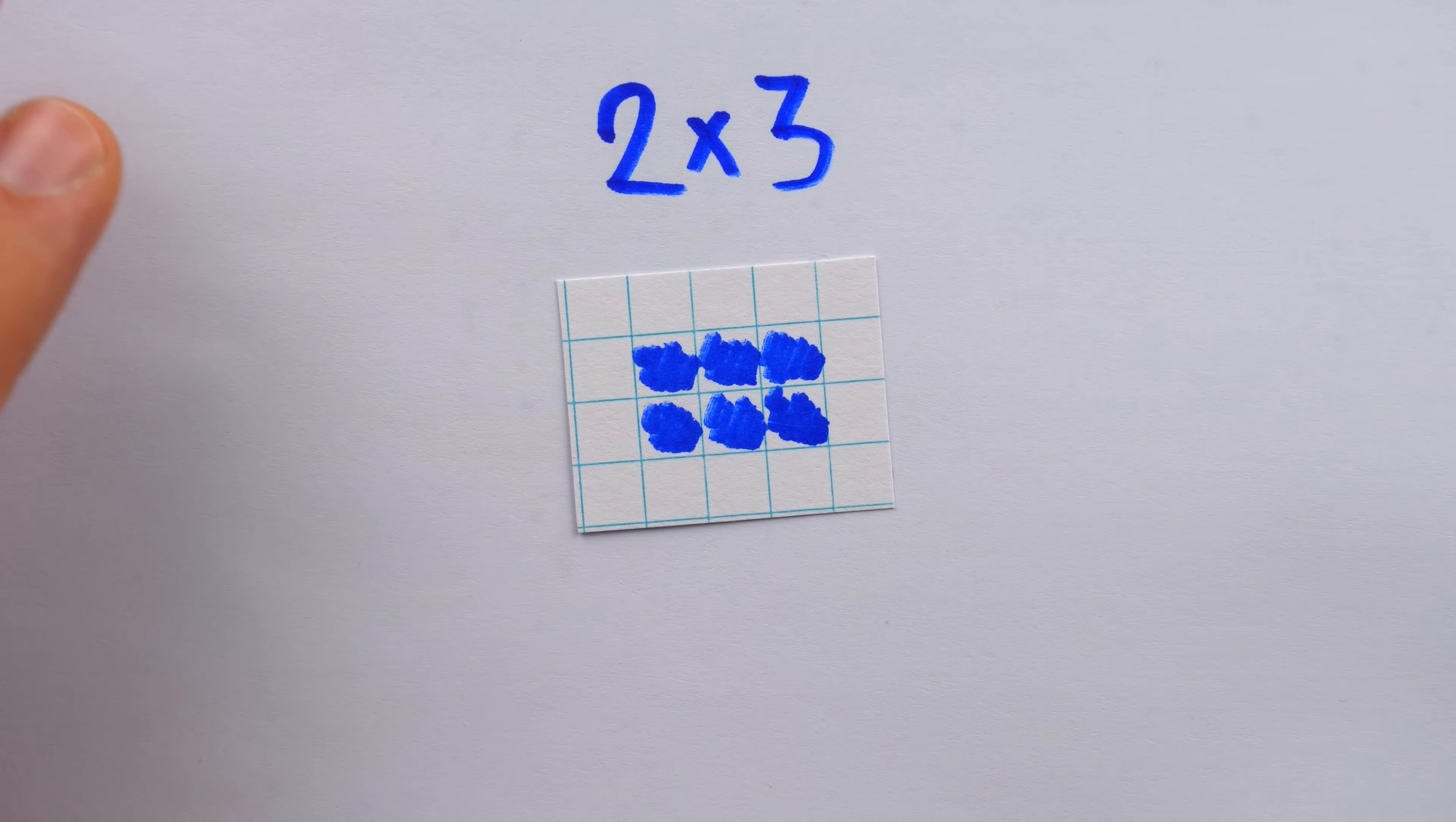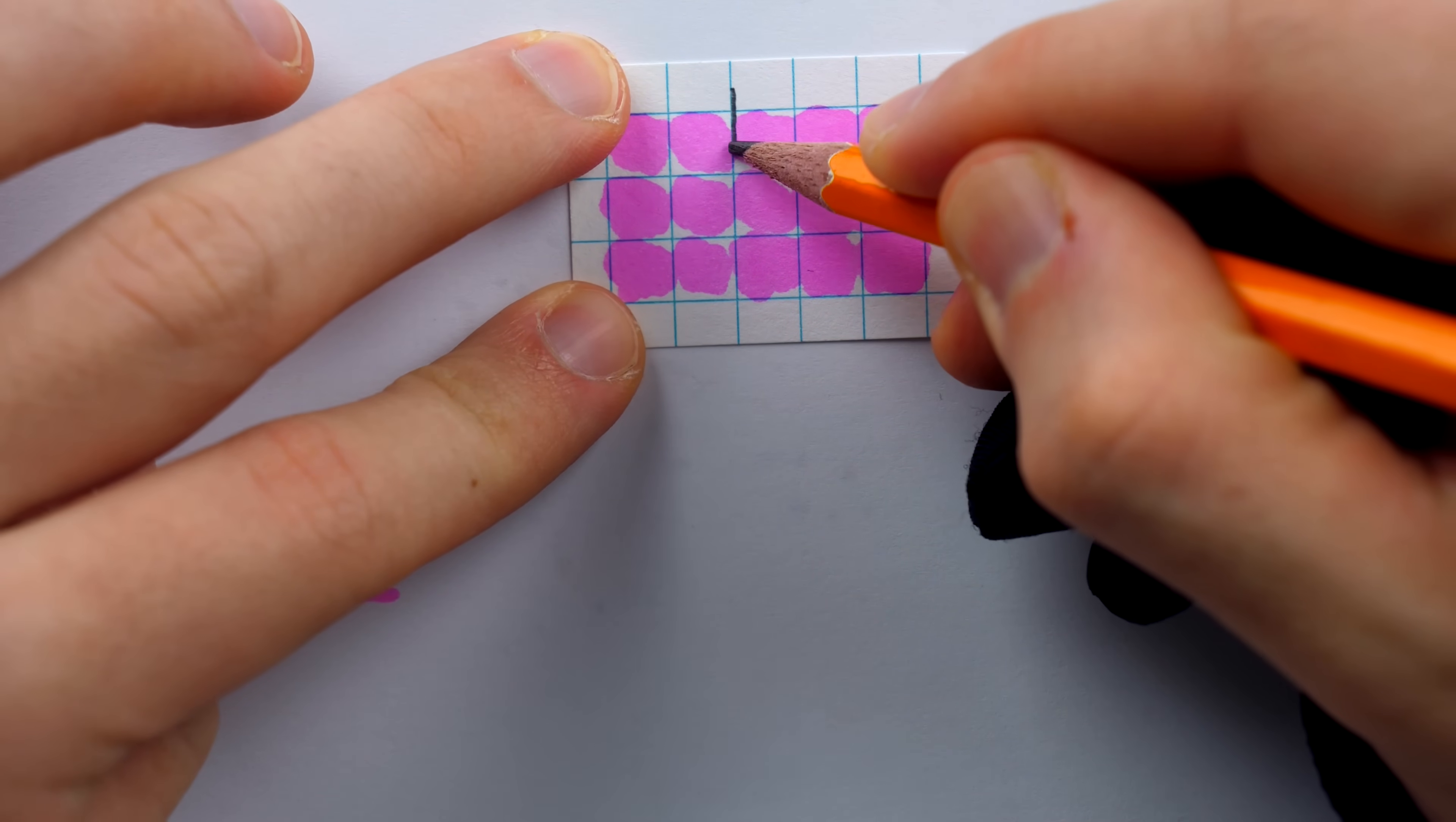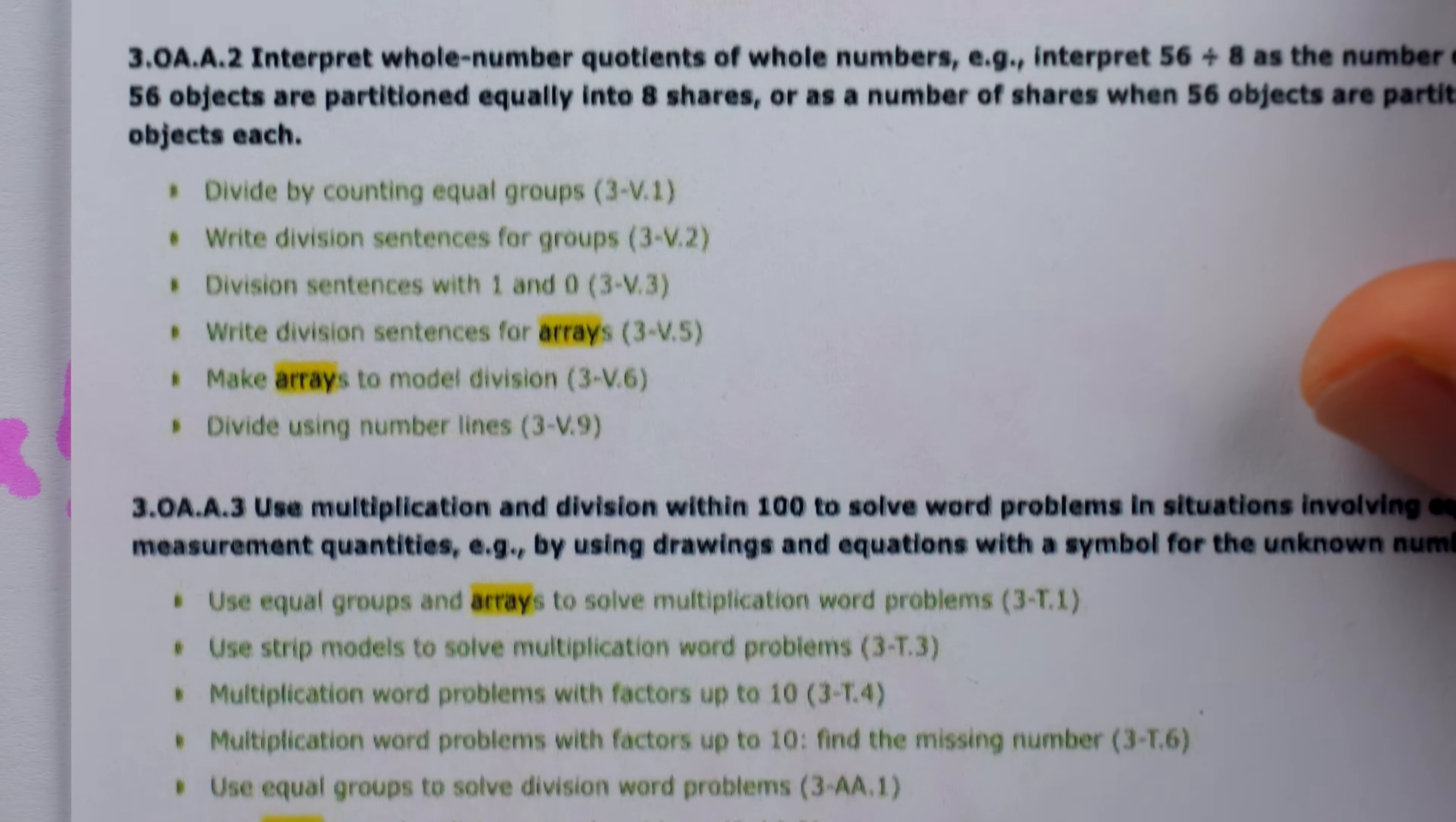By conceiving of multiplication as an array of objects, a student can naturally see many important properties of numbers and multiplication. One important property is that order of multiplication doesn't matter. Although students might be expected to conceive of 2 times 3 and 3 times 2 differently, with arrays, it's easy to see that the products are equal. By looking exclusively at the rows or at the columns, it's easy to see how multiplication is repeated addition, or to see the connection to division. And by splitting an array in two, a student can see how 3 times 5 is the same as 3 times 2 plus 3 times 3, for example. Which is a big step towards a distributive property, which is indeed part of third grade math standards.